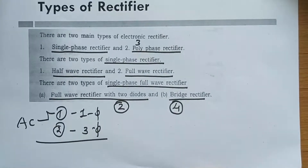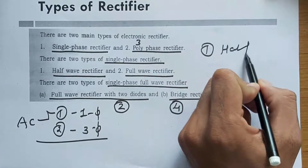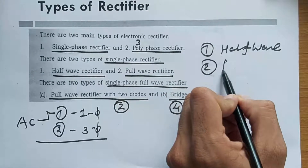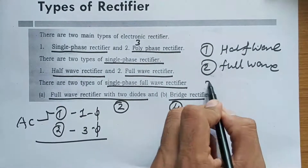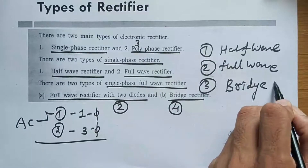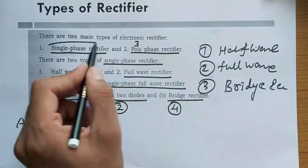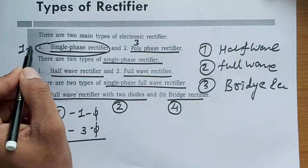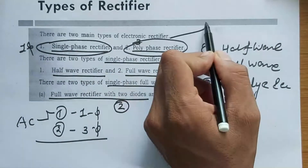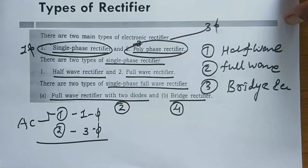So we have three main types of rectifiers. First, half wave rectifier. Second, full wave rectifier. Third, bridge rectifier. The full wave rectifier uses two diodes, and the bridge rectifier uses four diodes. We also have three-phase rectifiers.